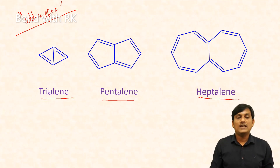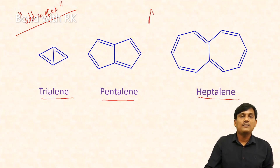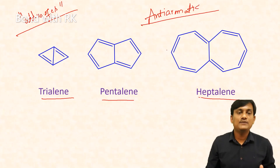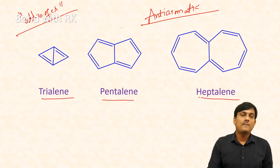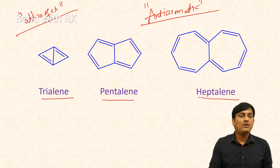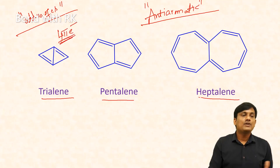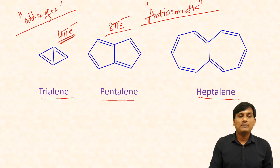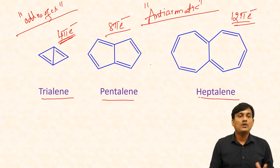Triazulene, pentazulene, and heptazulene — all these are anti-aromatic in nature. If the two rings are the same in an azulene, the behavior will be anti-aromatic. In triazulene there are two pi bonds, so four pi electrons — it is a 4n pi system. In pentazulene there are four pi bonds giving eight pi electrons, also a 4n pi system. In heptazulene there are six pi bonds giving twelve pi electrons, also a 4n pi system. So all these are anti-aromatic in nature.